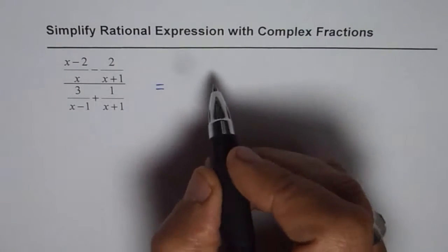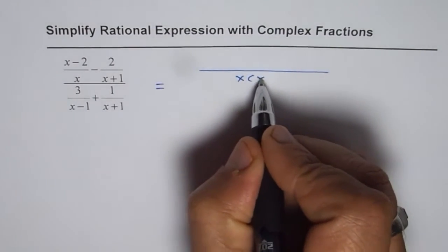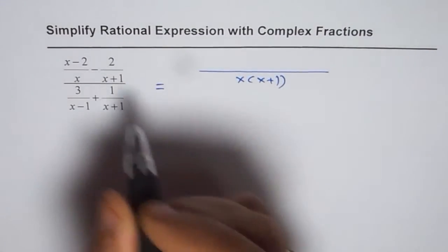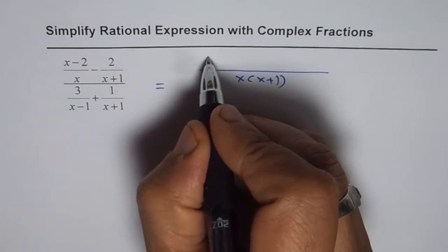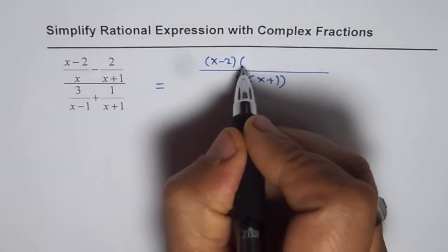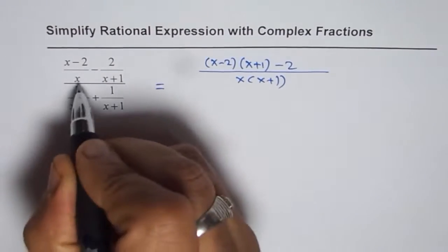So in the numerator, the common denominator for us is x times x plus 1. So x minus 2 gets multiplied by x plus 1. So we will cross multiply minus 2 times x.